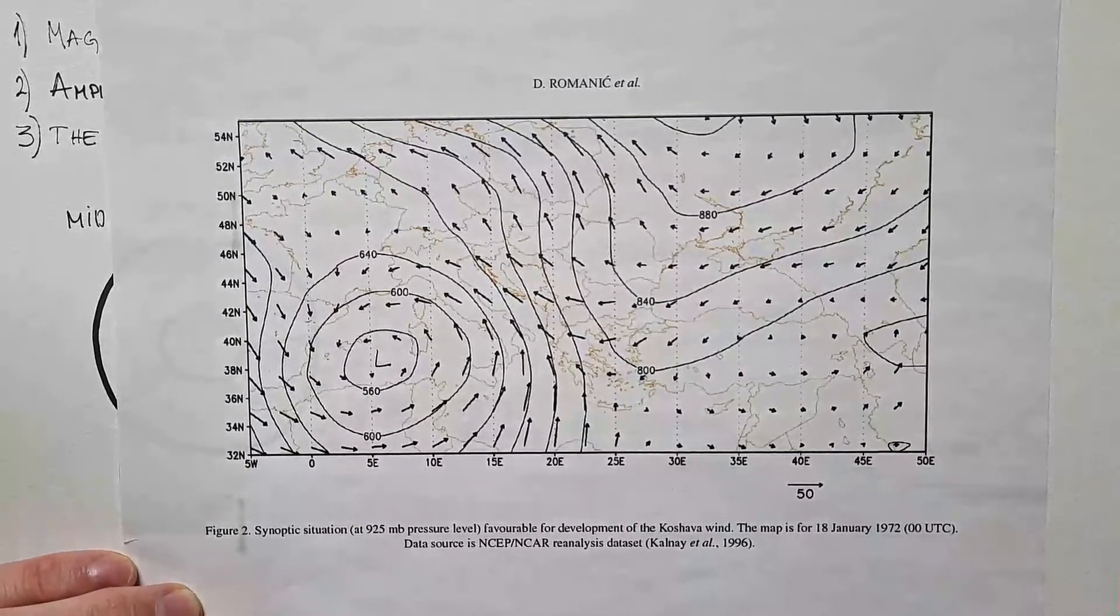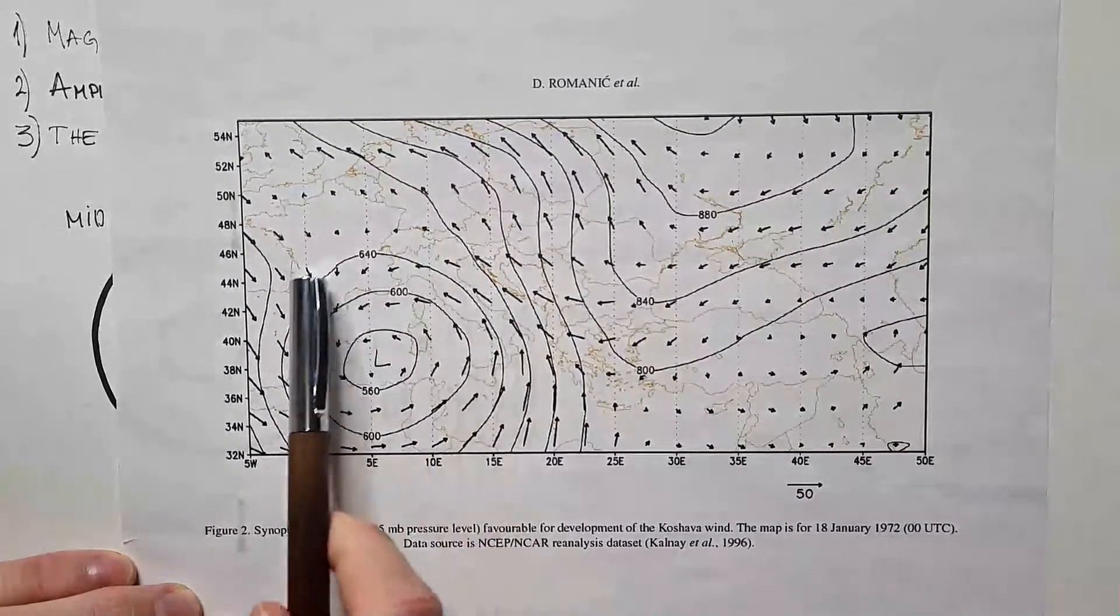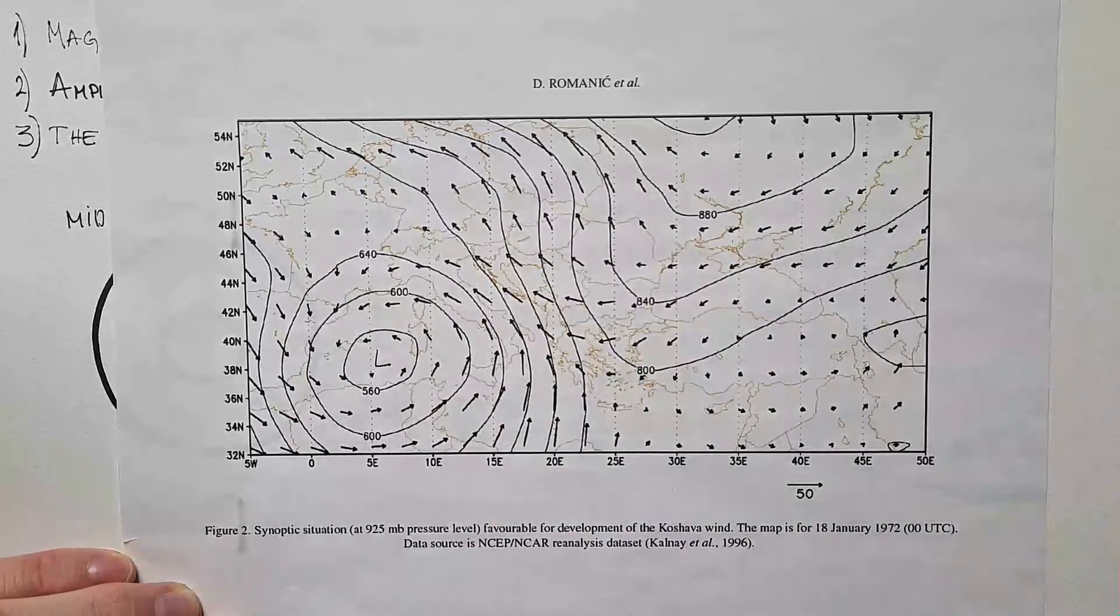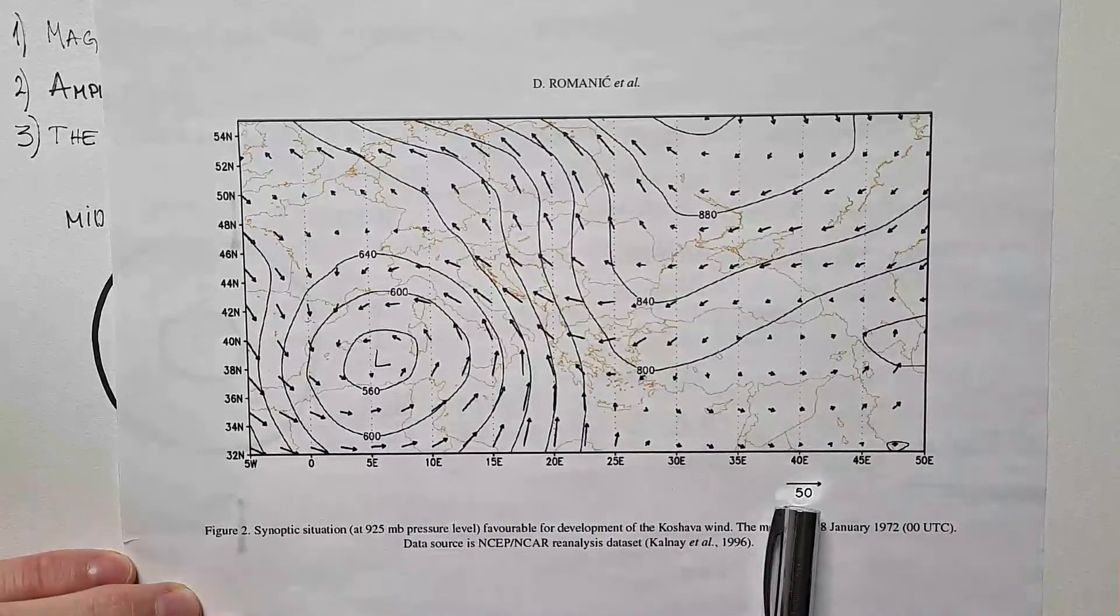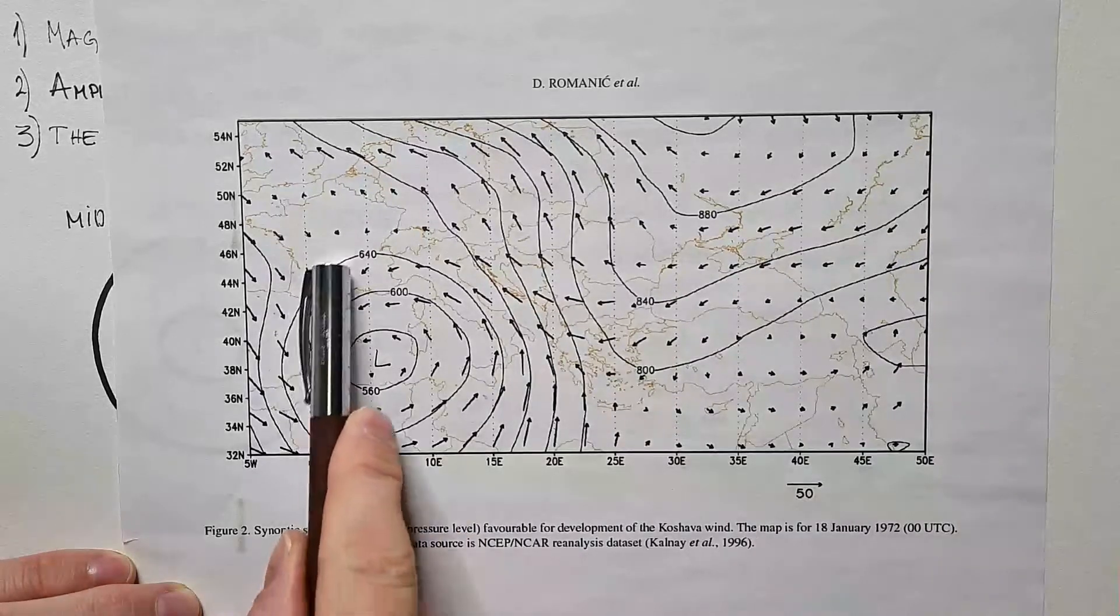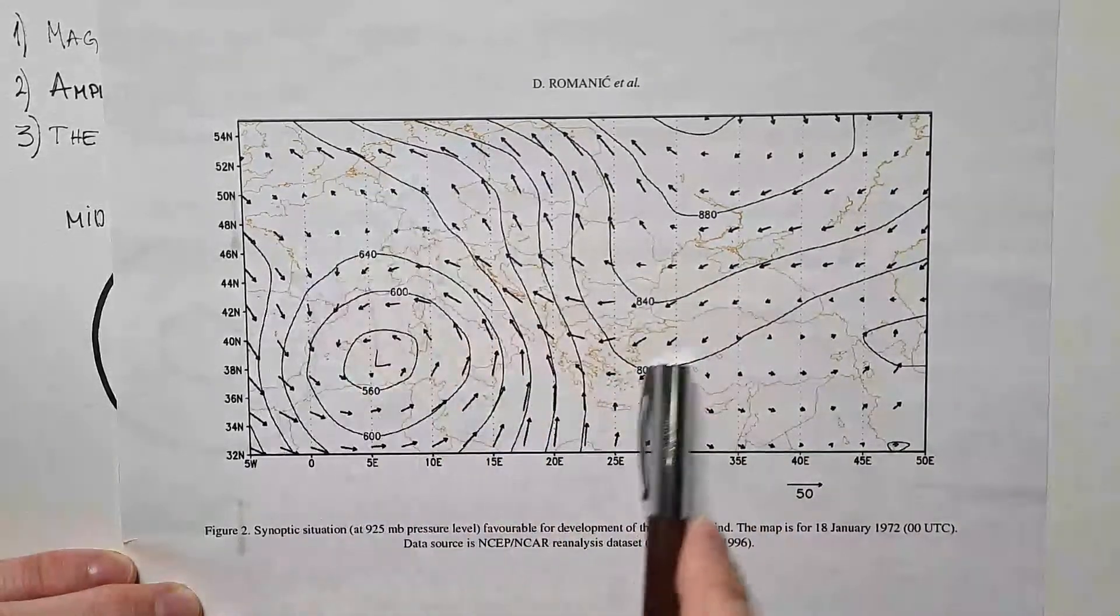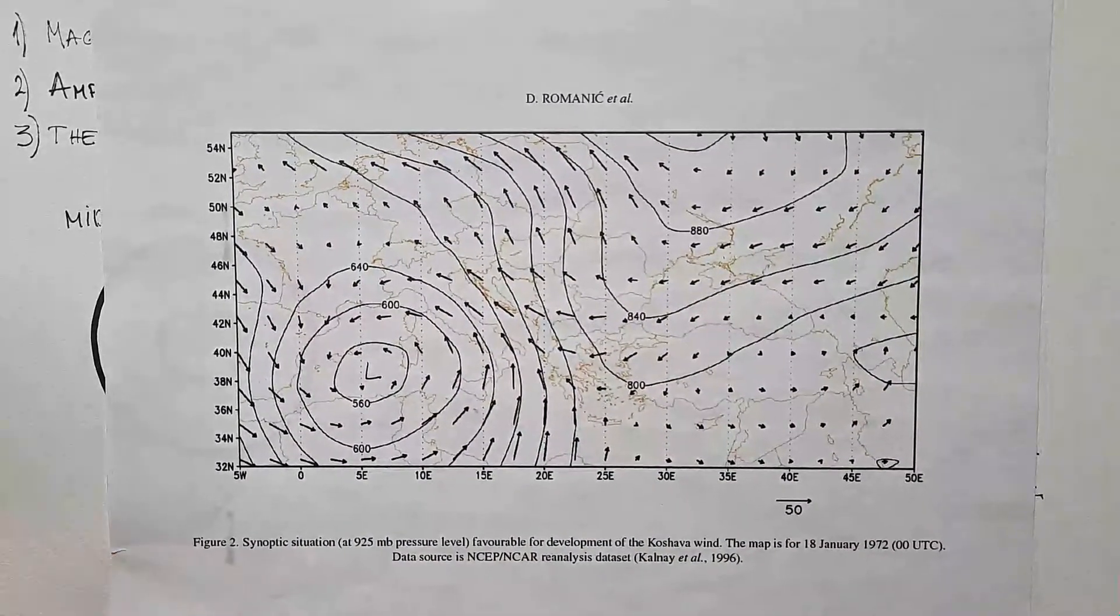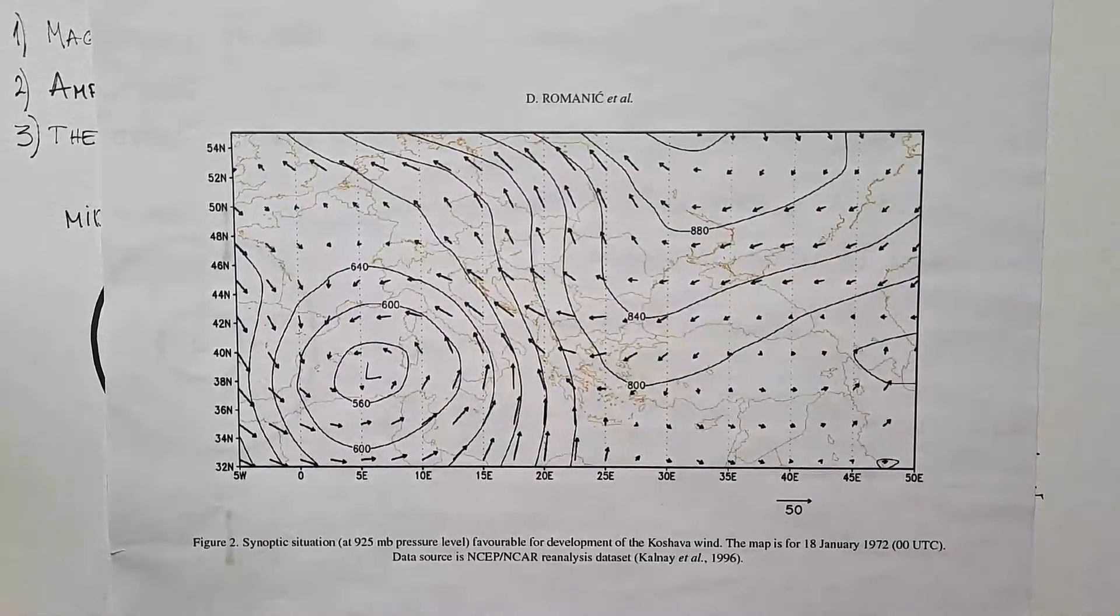What I want to show you here is that typical value of wind is order of magnitude 10 m per second. So reference value, 50 m per second, has this length. So you can see that order of magnitude of winds is 10 m per second. So is it 10, 12, 20, 25? It doesn't matter. That's the same order, 10.